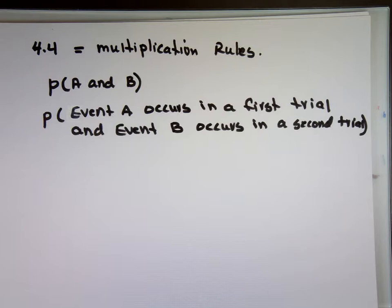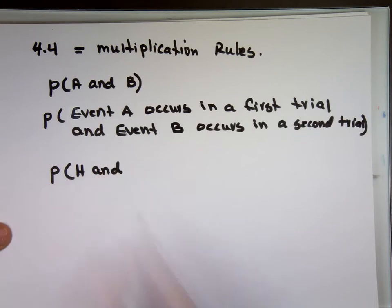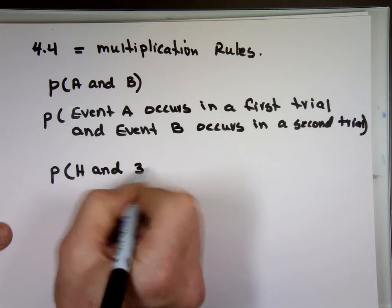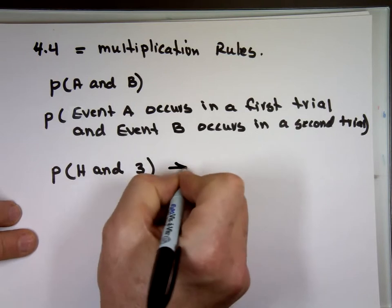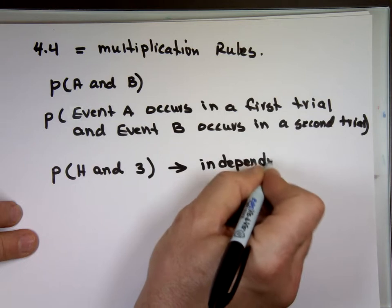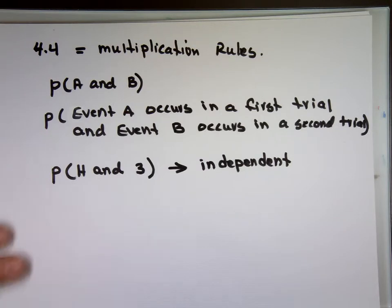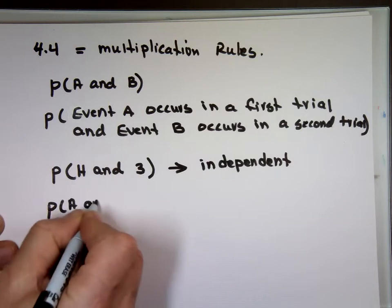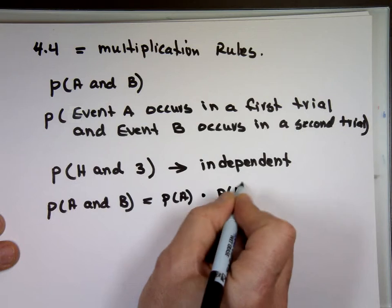Are the events dependent or are they independent? If I flip a coin, what is the probability that it lands on heads and we get three inches of snow on Saturday? Do you think the coin landing on heads is going to affect the outcome of the snow on Saturday? One has nothing to do with the other. These events are called independent events — what happened in the first experiment is not going to change what happens in the second event. So if you have independent events, the probability of A and B is equal to the probability of A times the probability of B.